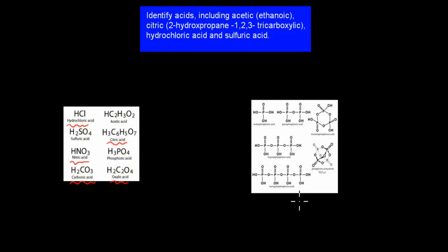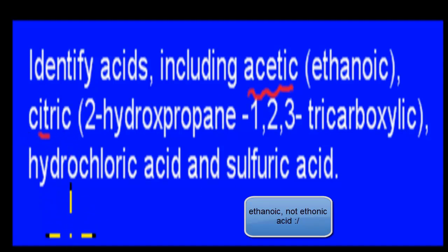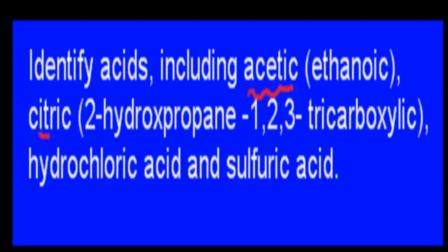In this dot point, what we have to do is identify acids including acetic acid, or another word for it is ethanoic acid, citric acid or 2-hydroxypropane-1,2,3-tricarboxylic acid. And these names you might actually have to remember because it's in a syllabus dot point. But don't get too concerned about them in general. You won't have any difficult questions with them. And hydrochloric acid and sulfuric acids. We have to identify three different types of acids and just go over why they're called acids.